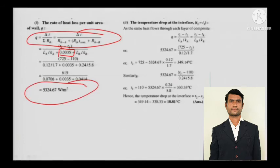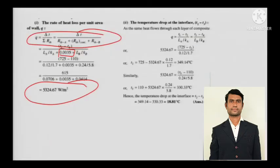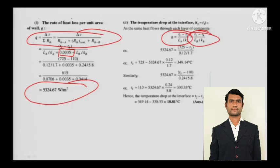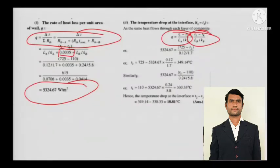For the temperature drop at the interface: since it is steady, the heat coming in goes out with the same magnitude. It is T1 minus T2 divided by LA/KA, and T3 minus T4 divided by LB/KB. So just use simple mathematics to calculate the contact temperature at the interface.